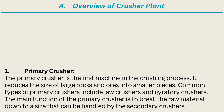1. Primary Crusher. The primary crusher is the first machine in the crushing process. It reduces the size of large rocks and ores into smaller pieces. Common types of primary crushers include jaw crushers and gyratory crushers. The main function of the primary crusher is to break the raw material down to a size that can be handled by the secondary crushers.